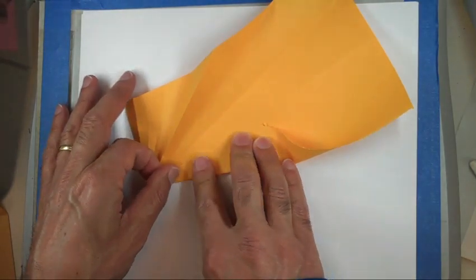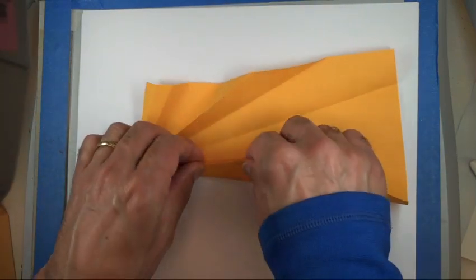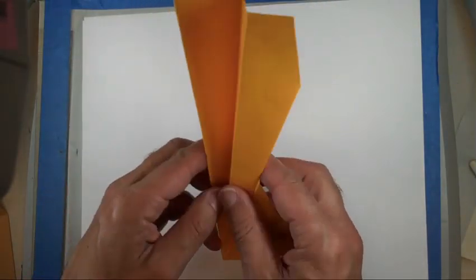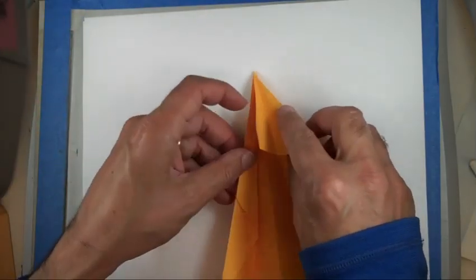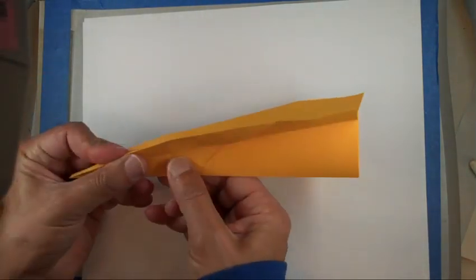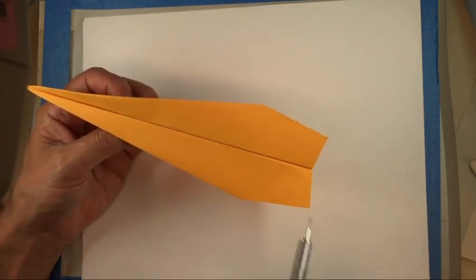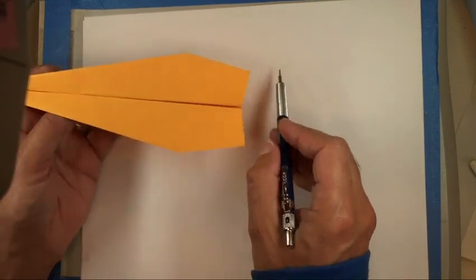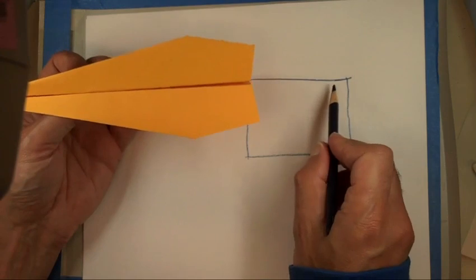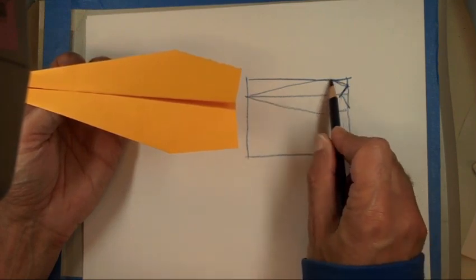So essentially, you're bisecting your angle three times. Alright, that's my beautiful airplane. So that's the shape. I think in your case, with 8½ by 11, this little tail part won't be as prominent because of the shape of your paper, which is a little more square than mine. When it gets folded, it'll just be a little shorter there.